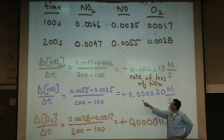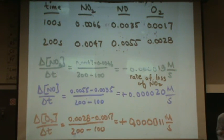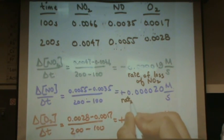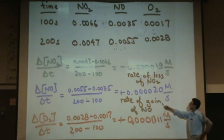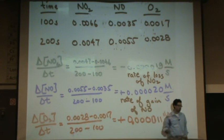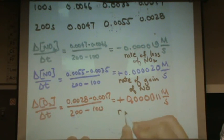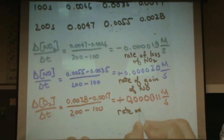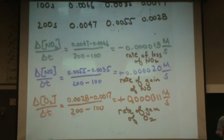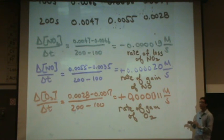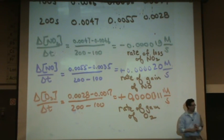The second one, see that it's positive, and it's a rate of gain or production or appearance, whatever synonym you prefer. The second one is the rate of gain of NO. So the positive means a gain, not a loss. And then the third one is also positive. That's the rate of gain of O2. Now it's going to change a little bit when I put the coefficients in.